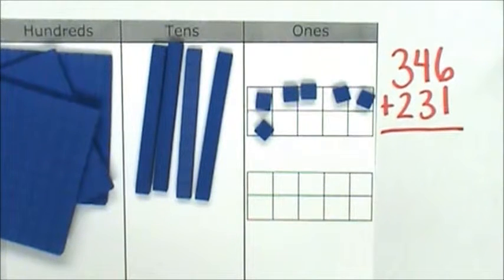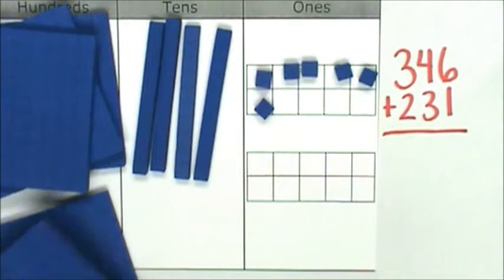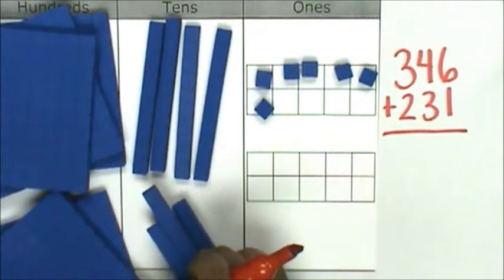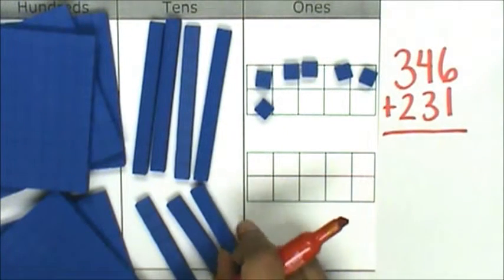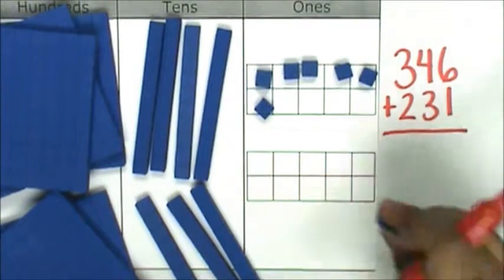Now, I will represent my yellow markers. Here's 231: 100, 200; 10, 20, 30; 1.